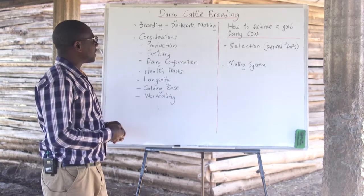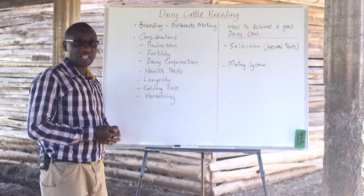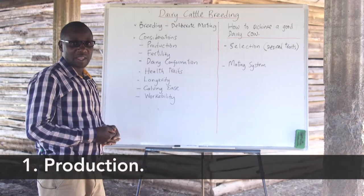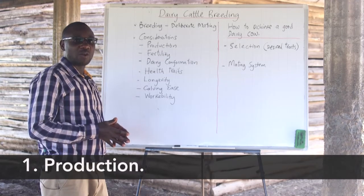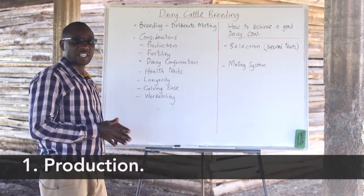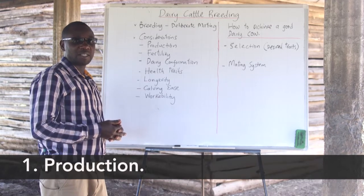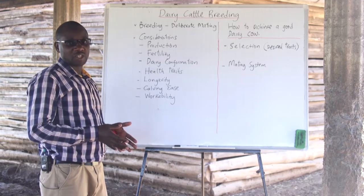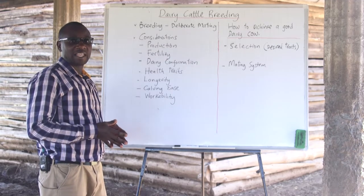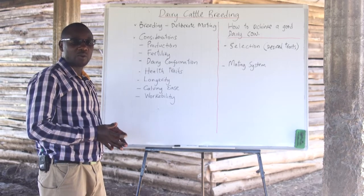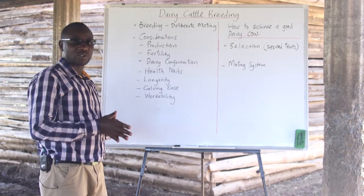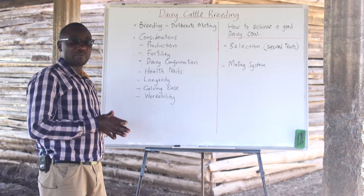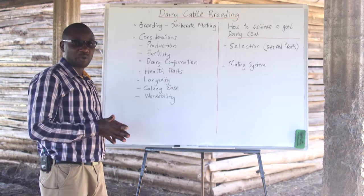When we are looking at breeding, we have a number of considerations to keep in mind. The first is production. Any breeder who wants to venture into breeding must be specific about their objective. When we talk about production, the aim of a dairy farmer is to have a cow that produces enough milk — a cow that will be improved for high production of milk.